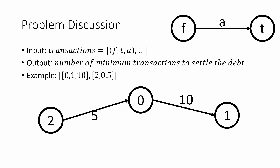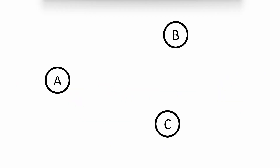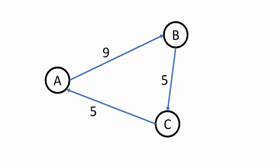Let's take another example with three nodes A, B, and C. A pays 10 rupees to B, B pays 1 rupee back to A, B pays 5 rupees to C, and C pays 5 rupees back to A. The first simplification we notice is that A pays 10 to B and B pays 1 back to A, so we can combine both of these edges to give 9 in its place — we've already removed one edge.